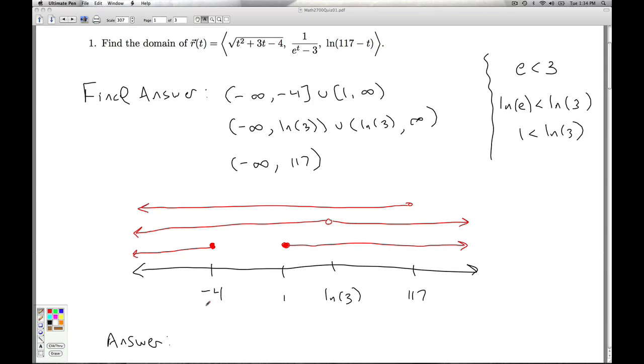So, what values of t are going to make all three parts happy? Well, those are going to be the values of t that are represented in all three of these sets. Everything from negative infinity up to negative 4 is in all three of these sets. So, I'm going to have that, negative infinity to negative 4, including the negative 4.